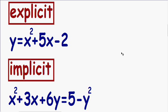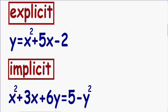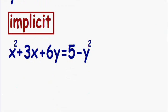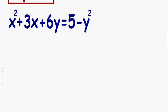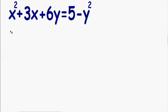So let's get started right away with this example. Here we have x squared plus 3x plus 6y is equal to 5 minus y squared. Notice how all the x and y terms are mixed together on the left and right hand side, so we have to use implicit differentiation.